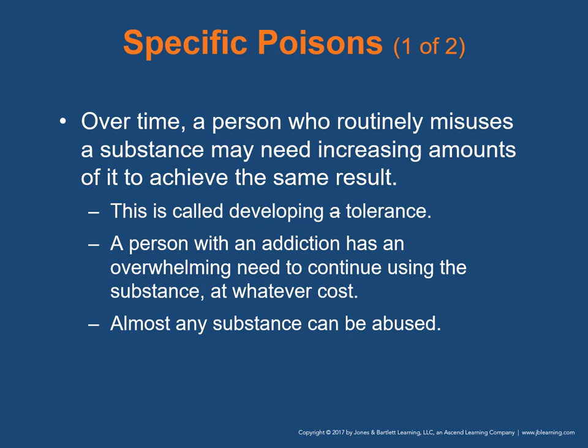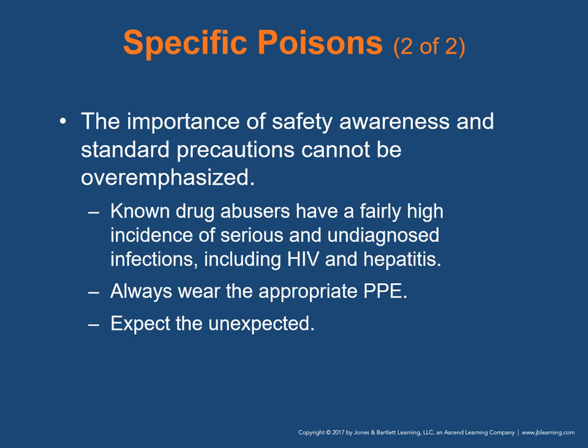Over time, a person who routinely misuses a substance may need increasing amounts to achieve the same result — that's referred to as tolerance. A person with an addiction to opioids or alcohol will need more to get the same effect because of tolerance, and will crave it enough to get it at any cost. Almost any substance can be abused. The importance of safety awareness and standard precautions can't be over-emphasized — known users have a high incidence of serious and undiagnosed infections, including HIV and especially hepatitis. Always wear appropriate PPE and expect the unexpected, especially if patients become violent.